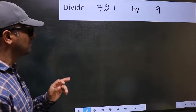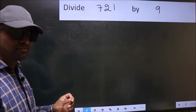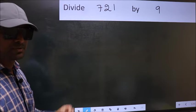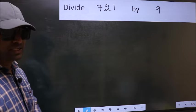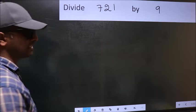Divide 721 by 9. While doing this division, many do this mistake. What is the mistake that they do? I will let you know. But before that, we should frame it in this way.